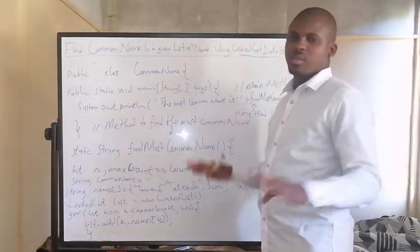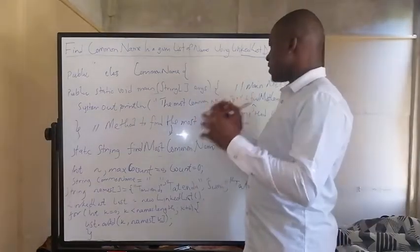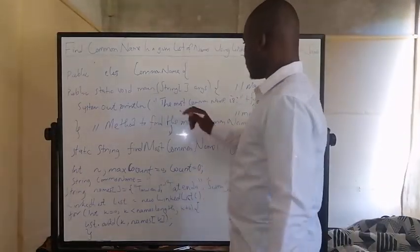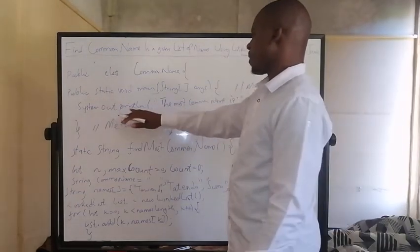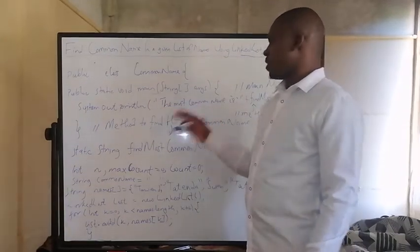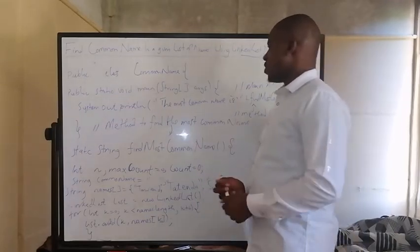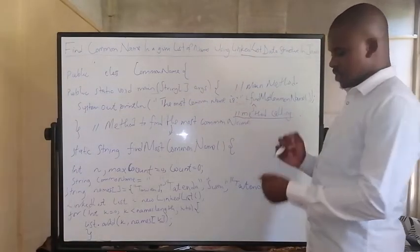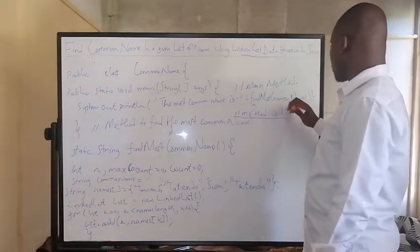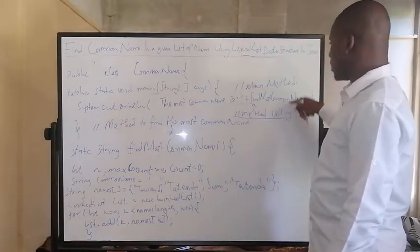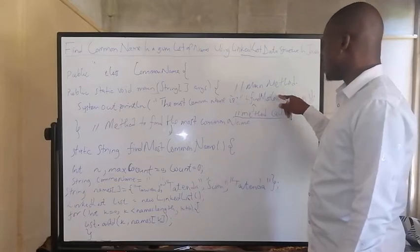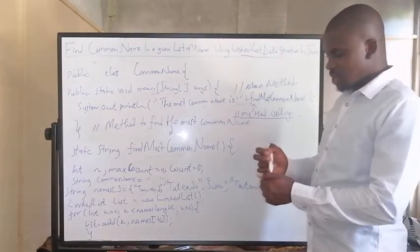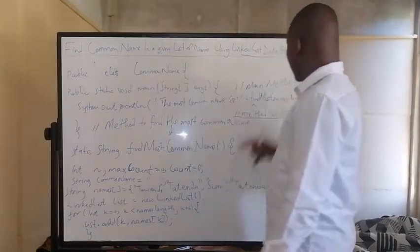In the main method, we are not doing the heavy lifting in there. What we are going to do in the main method is call the respective method which is going to find the common name and do the job for us. We've got this System.out.println method, which we use to print output to the screen. It is going to print 'The most common name is,' and then it will do a method call — calling this findMostCommonName method. This method will return the result of the most common name, and then it will display the output.